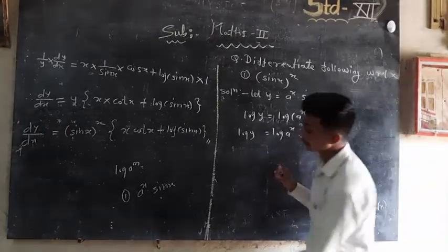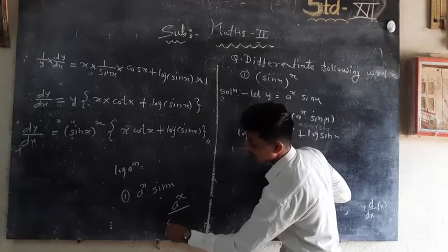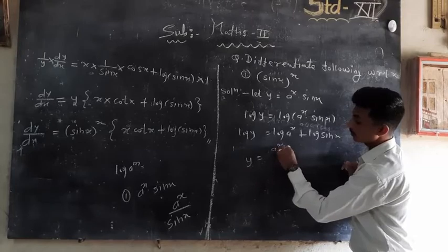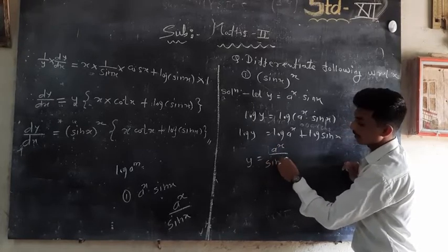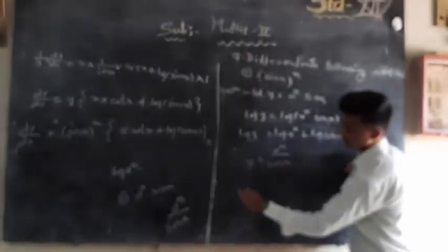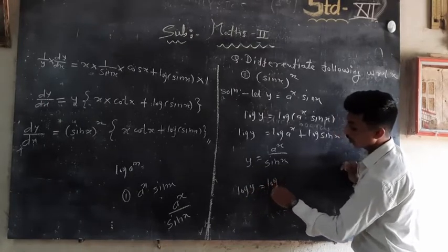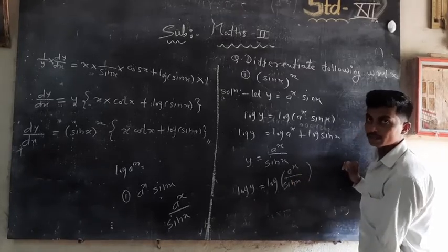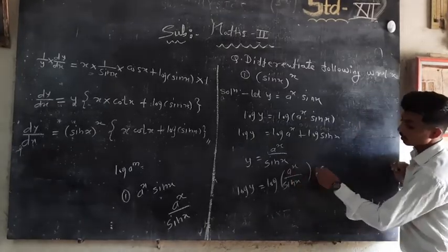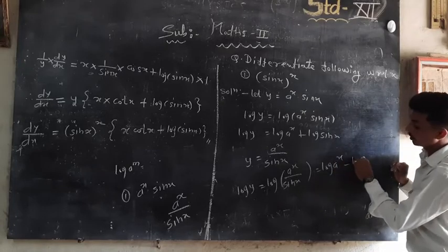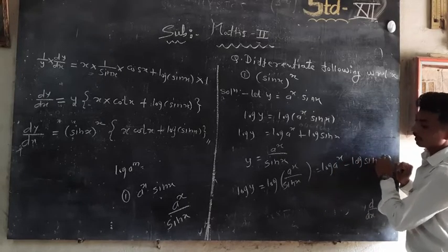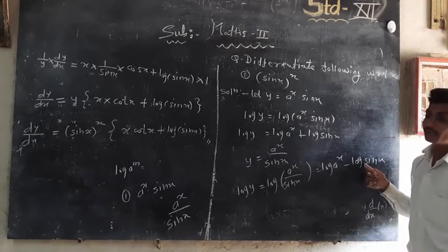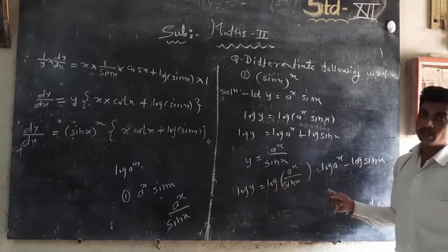Suppose the function is in quotient form: y = a^x / sin(x). Then log(y) = log(a^x / sin x) = log(a^x) − log(sin x). So log(y) = x·log(a) − log(sin x). We then differentiate to get our final answer.